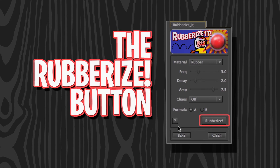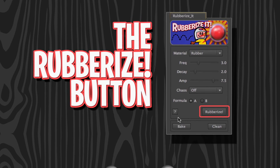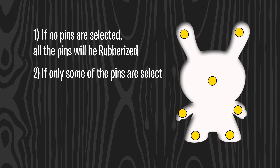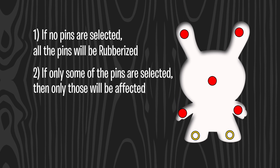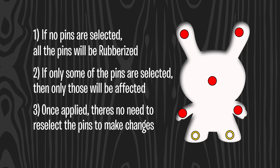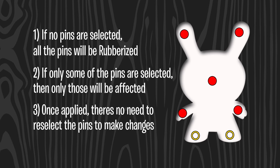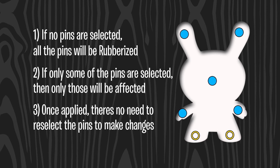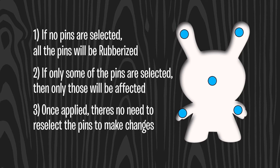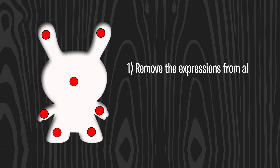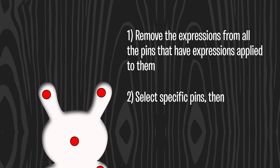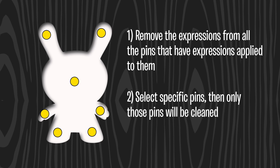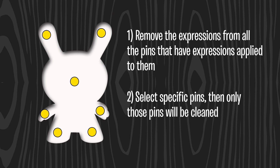There's a lot more to the Rubberize button than meets the eye. It actually applies Rubberize It in three different ways depending on the situation. One: if no pins are selected and none have been previously rubberized, then all the pins will be rubberized. Two: if only some pins are selected, only those will be affected. Three: once you have initially applied Rubberize It, there is no need to reselect pins to make changes — it will see which pins have expressions applied and will only change those pins from that point on. This will save a lot of time selecting and deselecting pins. Clicking the Clean button will remove all expressions from all pins that have expressions applied. If you select specific pins, then only those pins will be cleaned. Make sure you get to know the different ways Clean and Rubberize work — it's pretty simple, but it will be key to controlling Rubberize It and saving you a lot of time and energy.